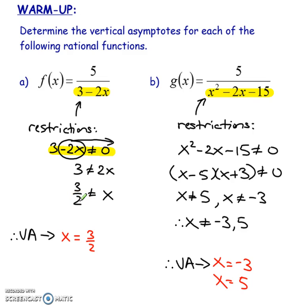So x cannot equal 3 over 2, because if I take that and put it into the x, it's going to give me a 0 in the denominator, which means that my entire function is undefined. Now when you write the equation for the vertical asymptote, you don't write the equal sign with the cross out.